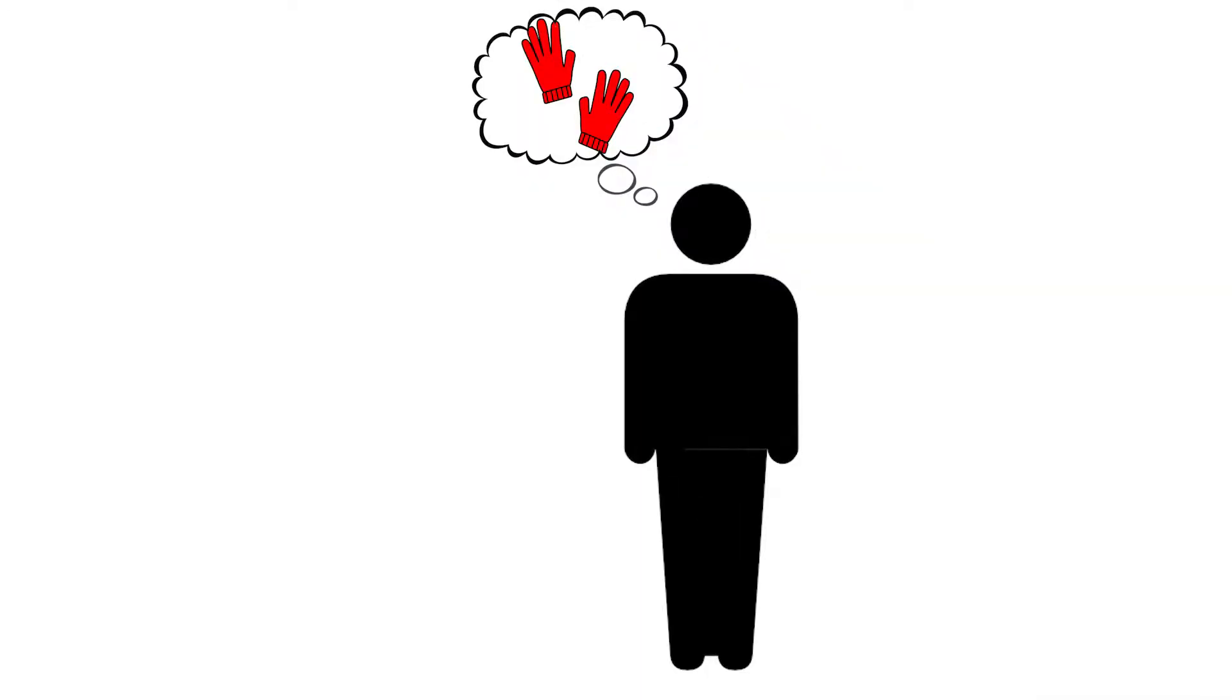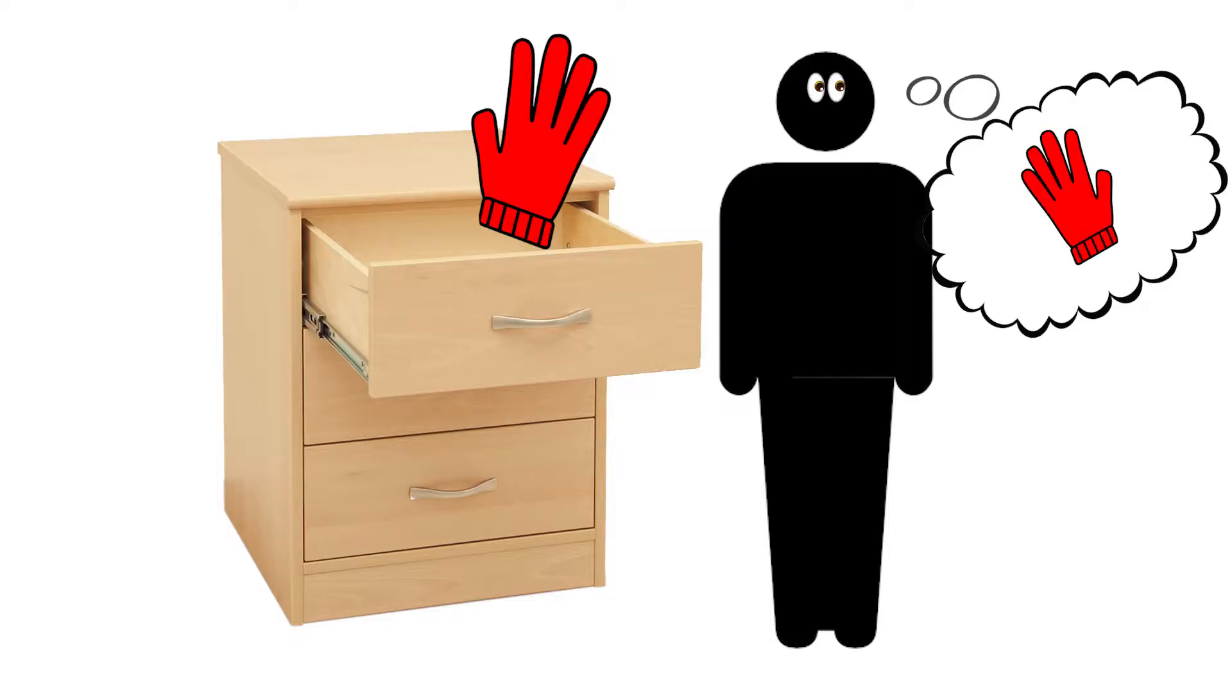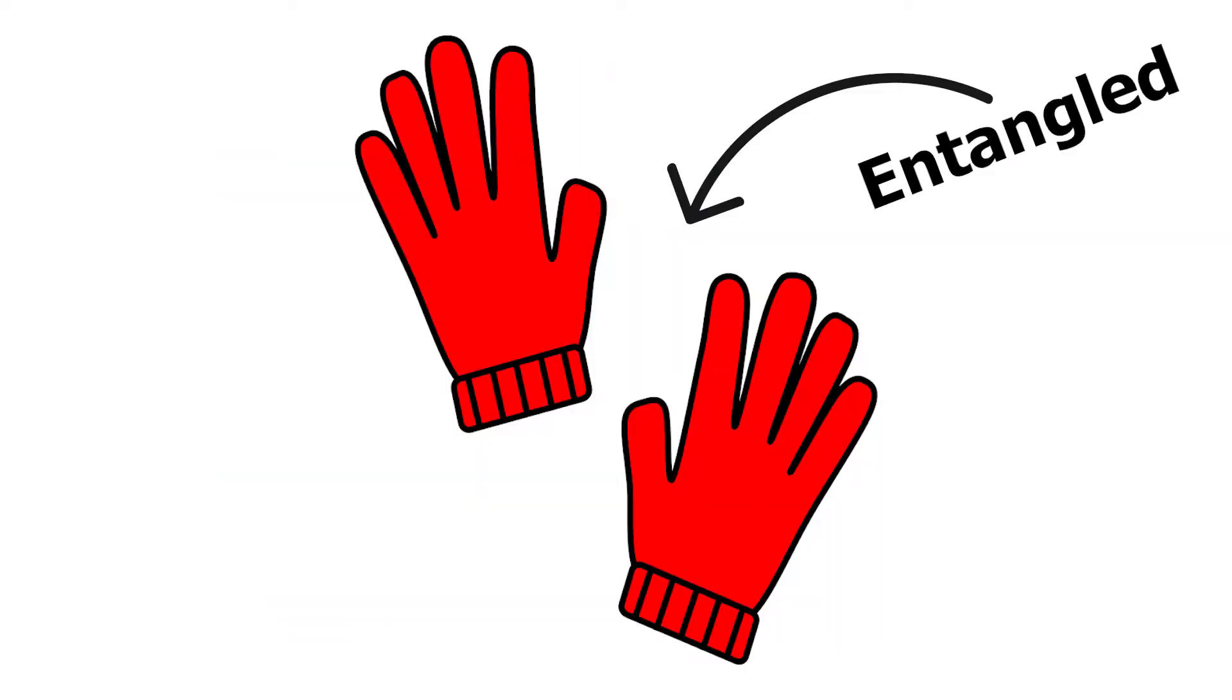Think of a pair of gloves. If you found a right glove alone in your drawer, you can be certain that the missing glove would fit your left hand. The two gloves could be described as entangled, as knowing something about one would tell you something important about the other that isn't a random feature.